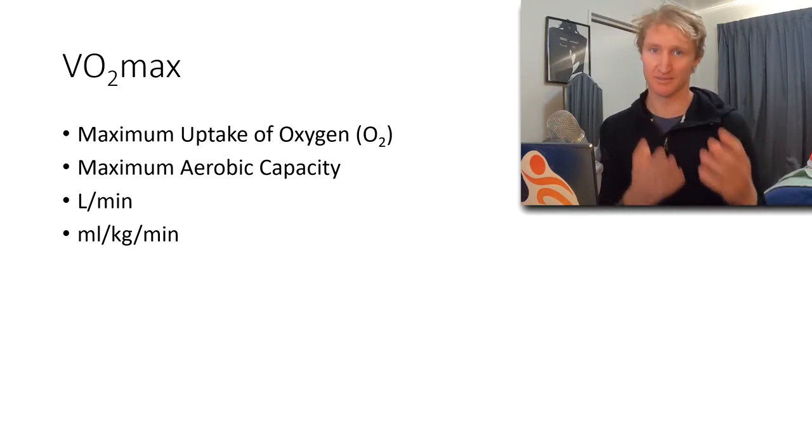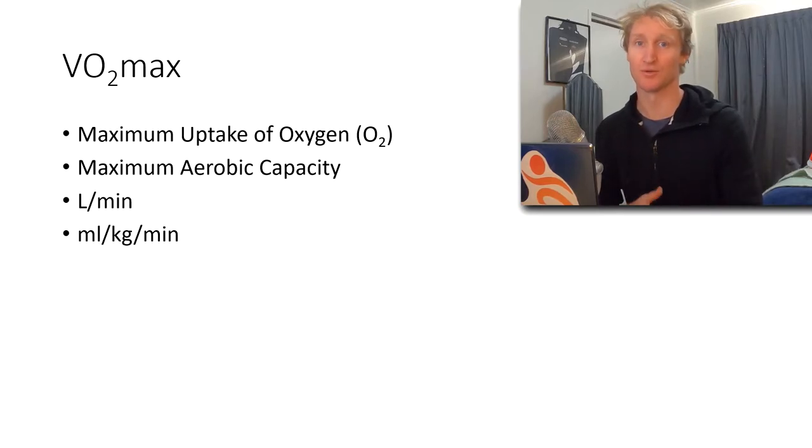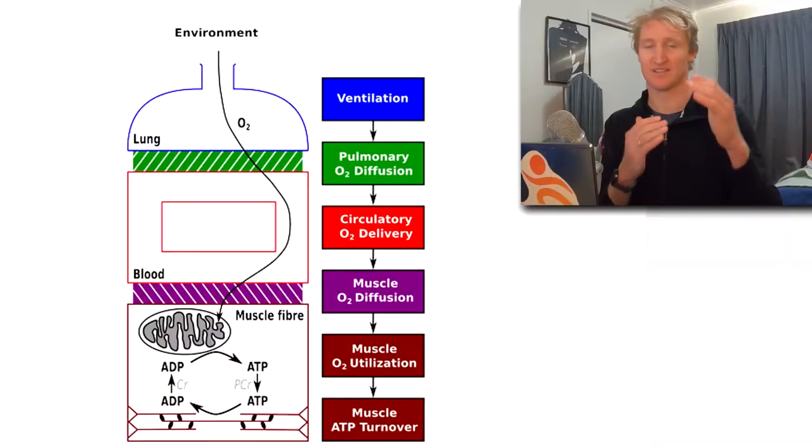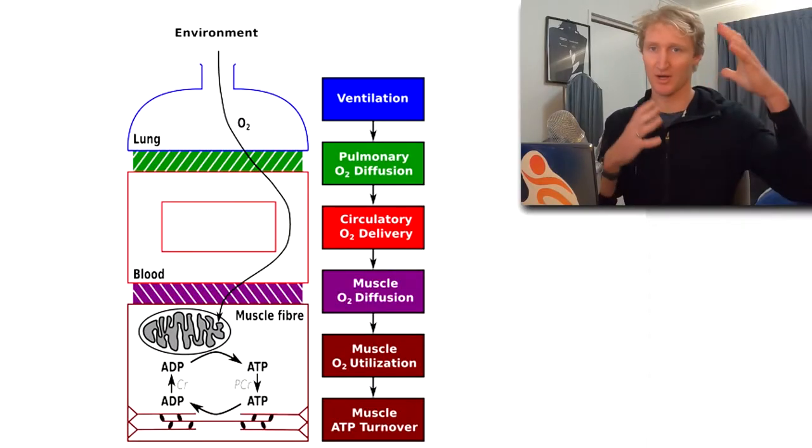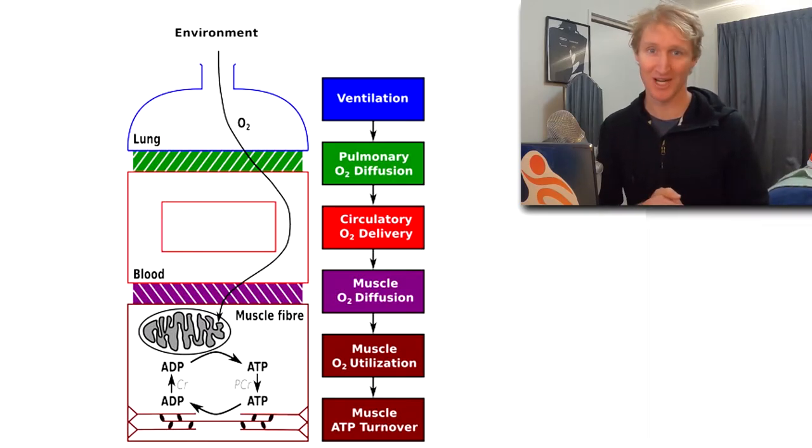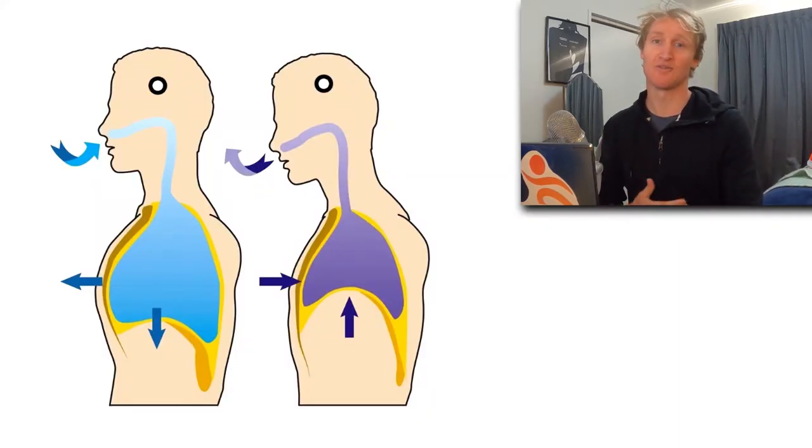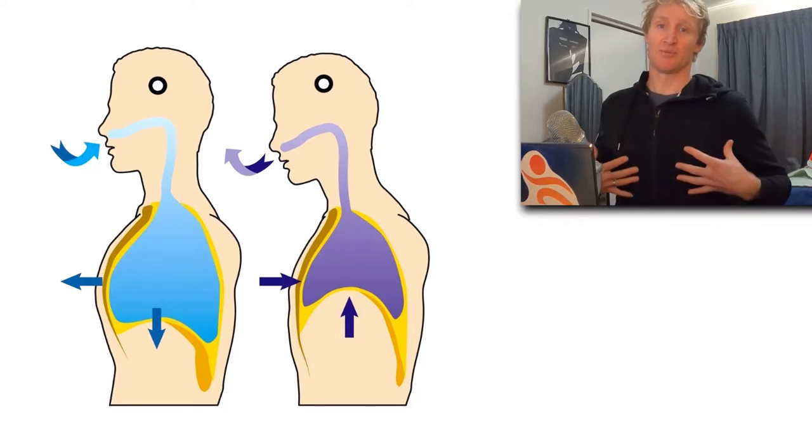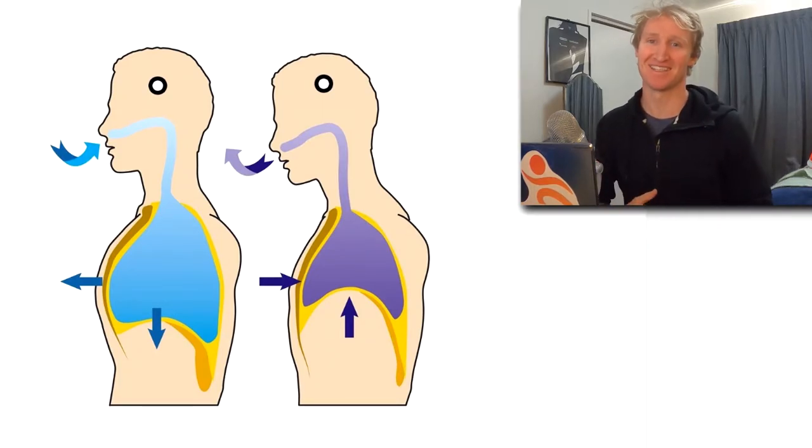VO2 max is influenced by some key processes within the whole physiological chain. First off, we have ventilation. Ventilation is breathing—breathe in oxygen, breathe out oxygen and CO2, so the unused oxygen we breathe off. That is not limiting in endurance sports because we're not restricted in the amount of oxygen we can get in, only potentially if you're at like 10,000 meters altitude.